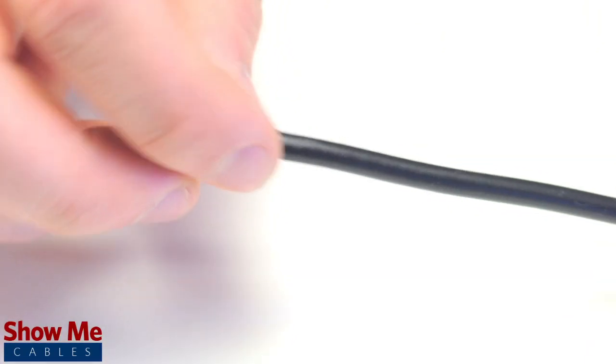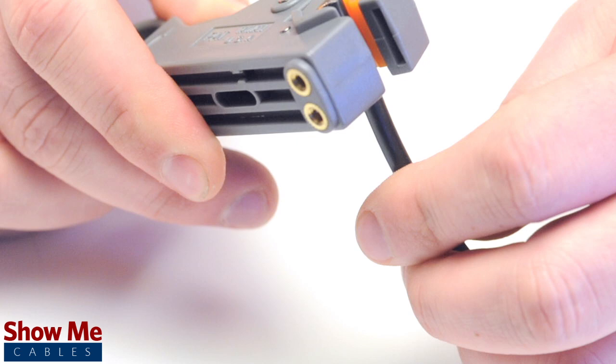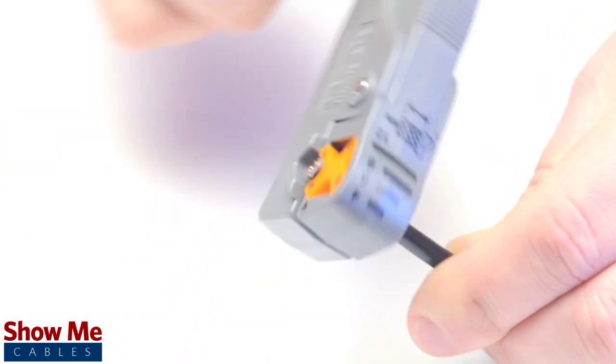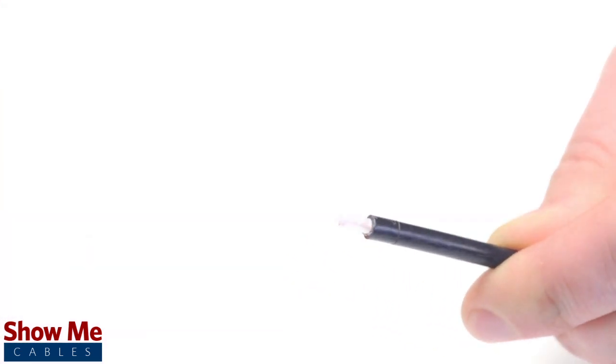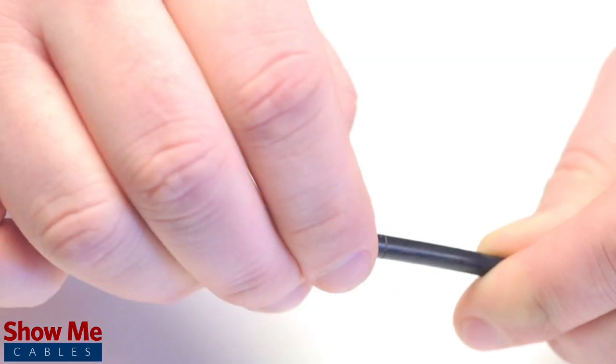Start by inserting the ferrule over the outer jacket of the cable. Then using your cable stripper, strip back the outer jacket and dielectric. The advantage of using a cable stripper is that it will strip back the jacket and dielectric at the same time.